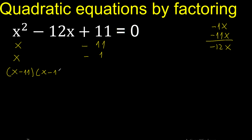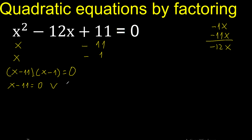Equal 0. By the zero-product property (multiplication), therefore this equals 0, or this equals 0.